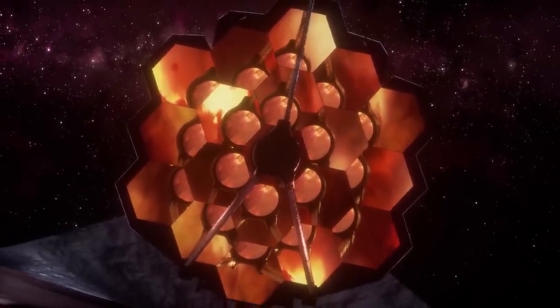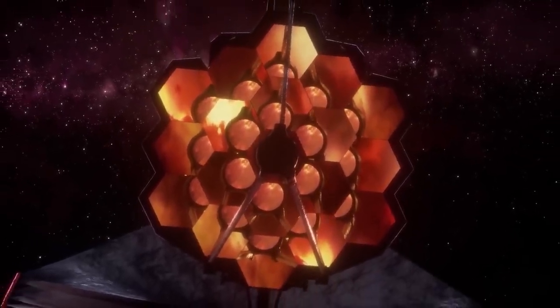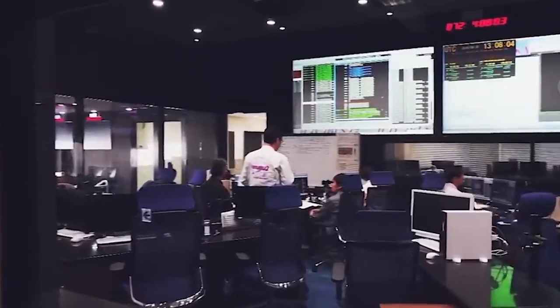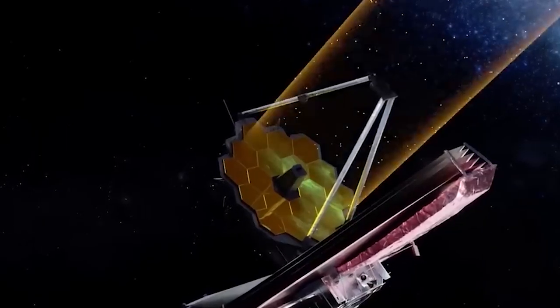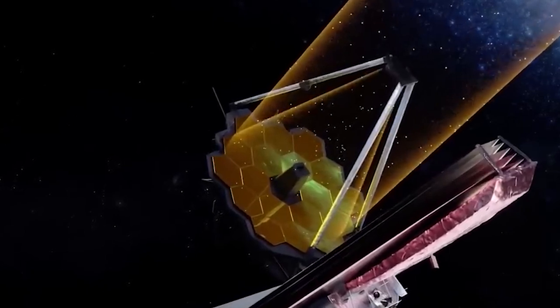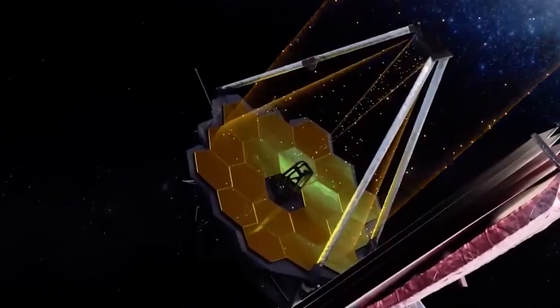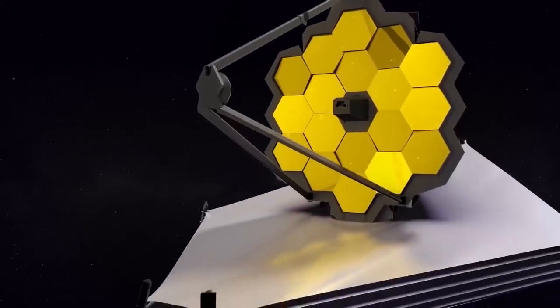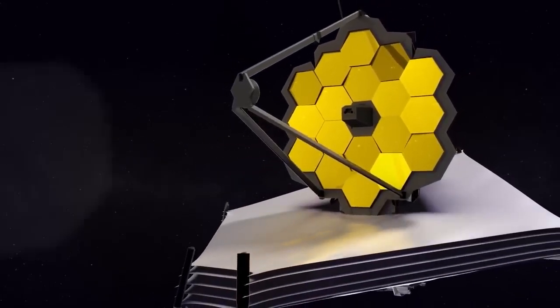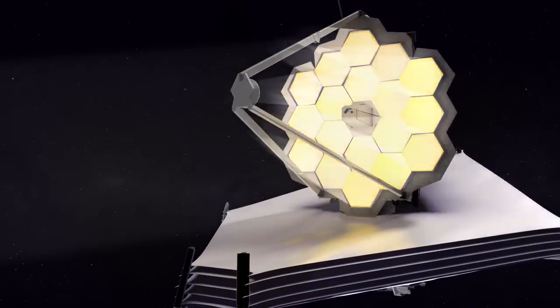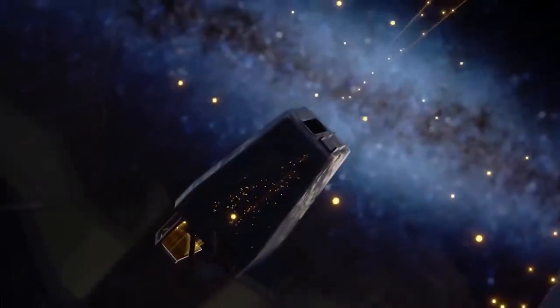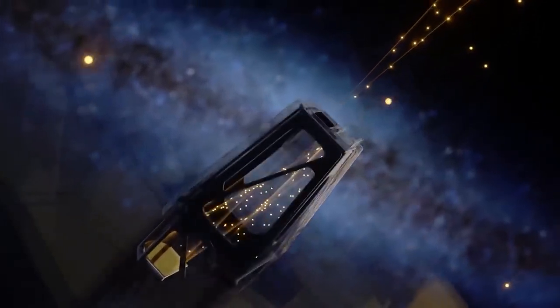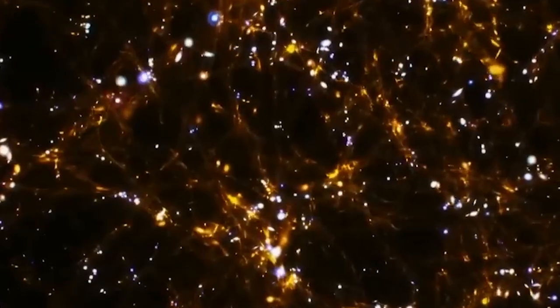One of the JWST's key revolutionary features is its large primary mirror, measuring 6.5 meters in diameter. This is over two and a half times larger than the Hubble's mirror, allowing the JWST to gather more light and achieve unprecedented sensitivity. This enhanced light-gathering capability enables the telescope to observe incredibly faint objects, such as distant galaxies and young stars, offering a glimpse into the universe's infancy.